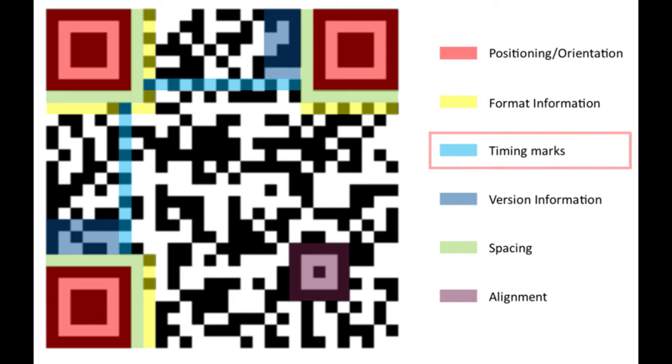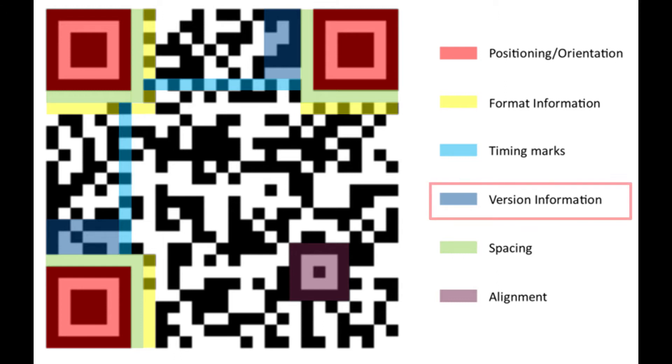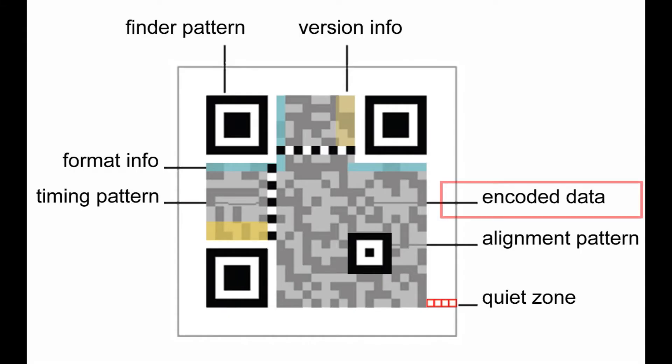Version information helps you determine which version is used in a particular code. And there are data cells — each individual black or white square that is not part of those standard patterns. They contain the actual data encoded in the code.